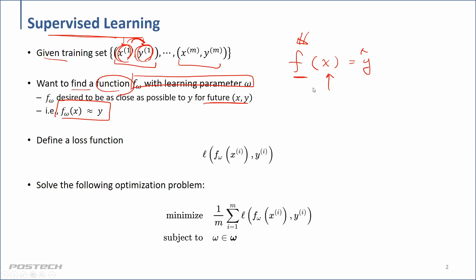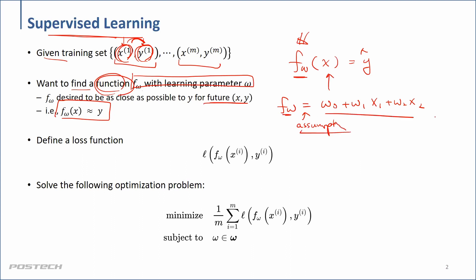In many cases, the function is parameterized — we say f with parameters omega. One example is omega_0 plus omega_1 * x_1 plus omega_2 * x_2, which is linear regression or a linear classification problem. Those are our assumptions about the structure of f.